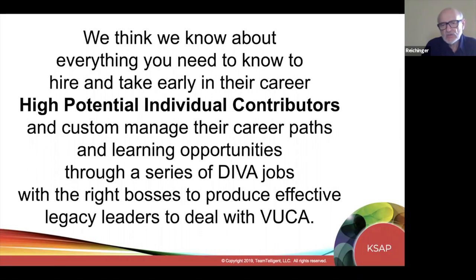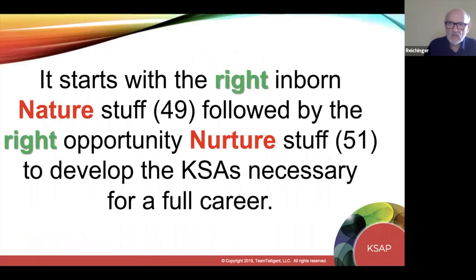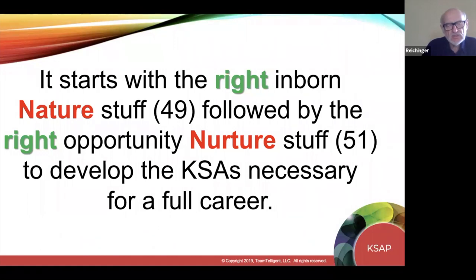VUCA is volatility, uncertainty, complexity, and ambiguity. We know from the research that it starts with having the right inborn stuff from the nature side, followed by the right opportunities from the nurture side to develop the 90 or so KSAs necessary over an entire career to become a senior officer. The research is pretty definite — it's 49-51. That's 50 years of research into the genetics of leadership.